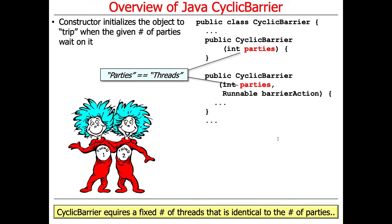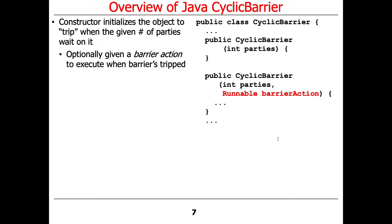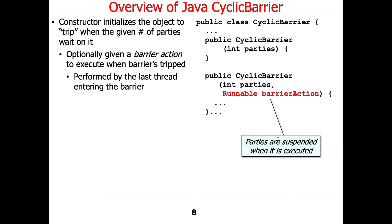In particular, a CyclicBarrier requires a fixed number of threads that's identical to the number of parties. It can also be given an optional barrier action, which will be executed when the barrier is tripped.